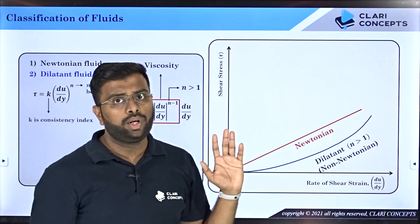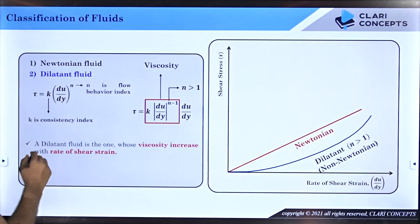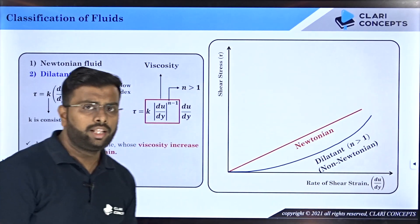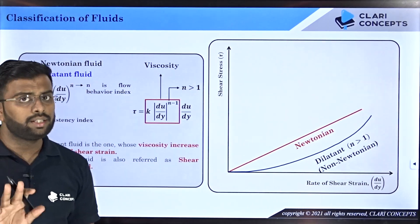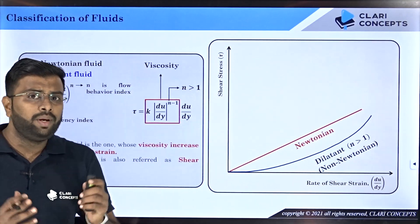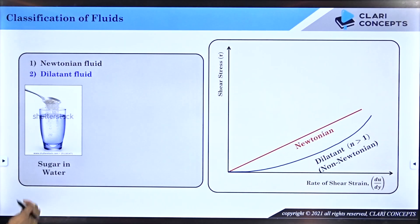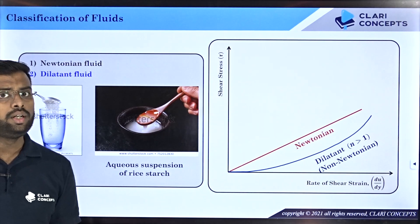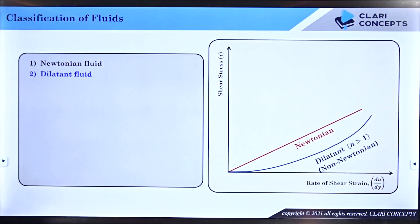Therefore, dilatant fluids are also called shear thickening fluids — their viscosity increases with an increase in the rate of shear strain. Examples include a sugar solution in water and an aqueous suspension of starch.